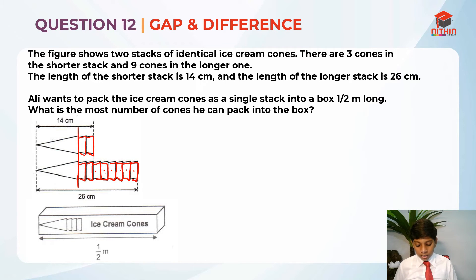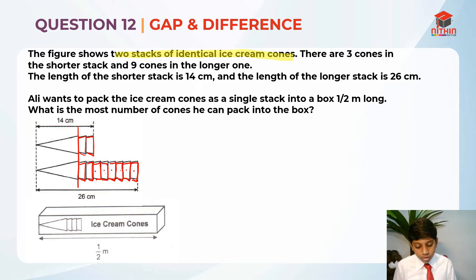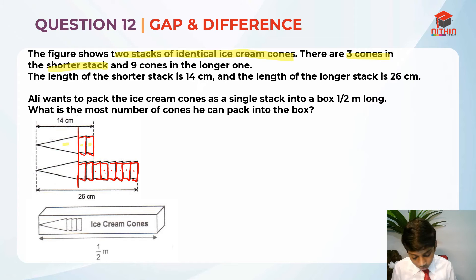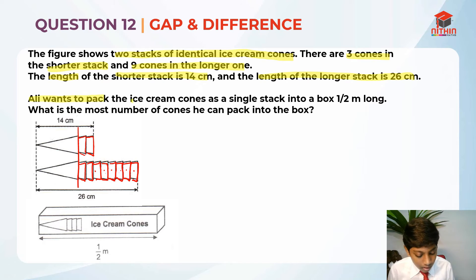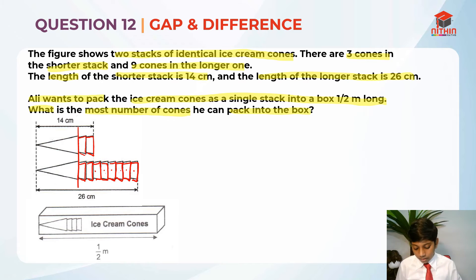Now that we have read the question and analyzed the figure, let's highlight the key information. The figure shows two stacks of identical ice cream cones — all cones are the same. There are three cones in the shorter stack and nine cones in the longer one. The shorter stack is 14 cm and the longer stack is 26 cm. Ali wants to pack the cones as a single stack into a box half a meter long.